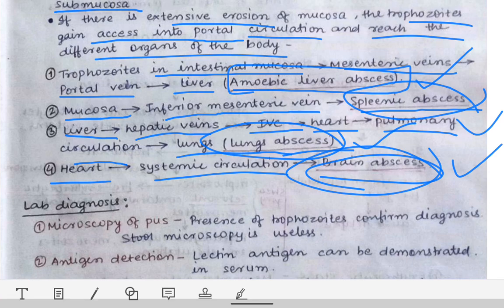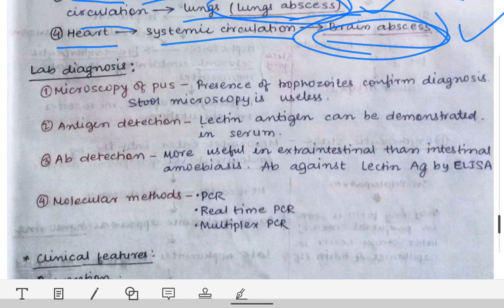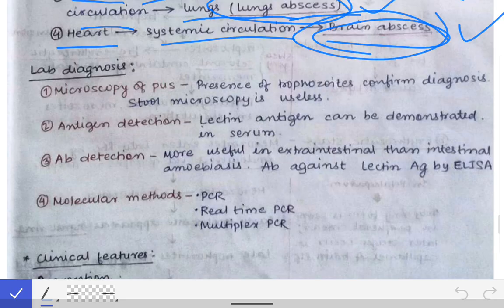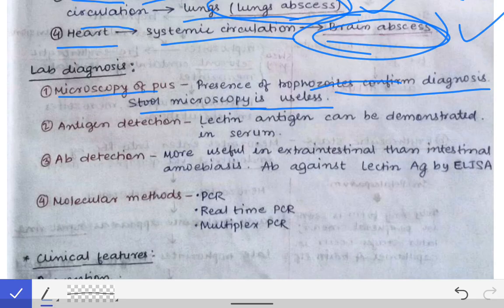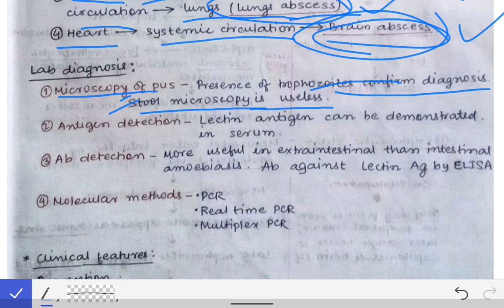For lab diagnosis of extra-intestinal amoebiasis, microscopy of the pus can be performed, where the presence of trophozoites confirms the diagnosis. Stool microscopy is not useful here — we will not find trophozoites in stool. However, if we obtain pus from a liver abscess, splenic abscess, lung abscess, or brain abscess and detect trophozoites in it, that confirms extra-intestinal amoebiasis.